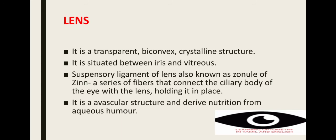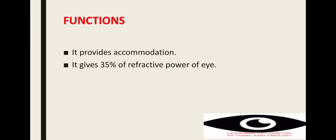The lens is a transparent biconvex crystalline structure situated between the iris and the vitreous. The zonule of Zinn — a series of fibers — connects the ciliary body with the lens, holding it in the correct place. The lens is an avascular structure, so it derives nutrition from aqueous humor.